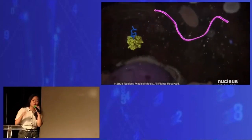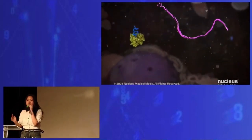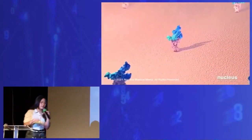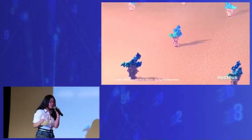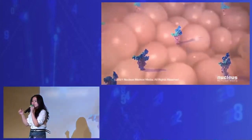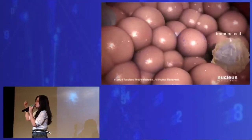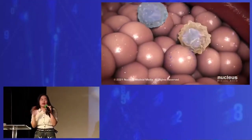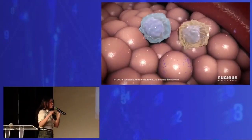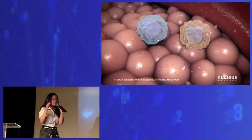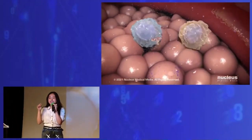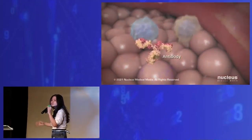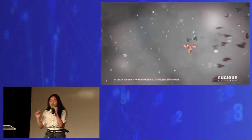After making the spike protein, your cell destroys the mRNA from the vaccine. Your cell then presents the spike protein on its surface. When your immune cells spot the protein and realize it doesn't belong there, the immune cells start making antibodies as part of an immune response, to fight the virus if you get infected.